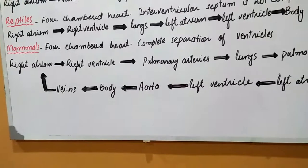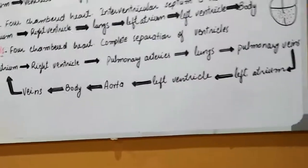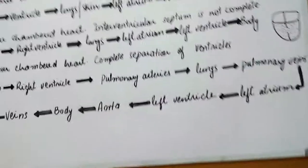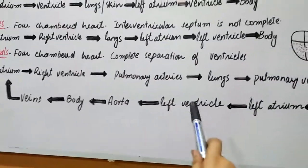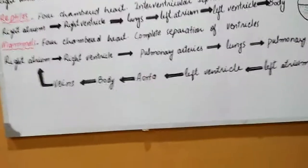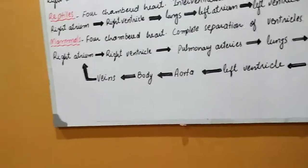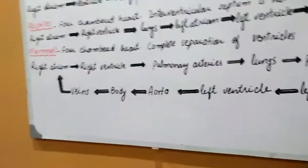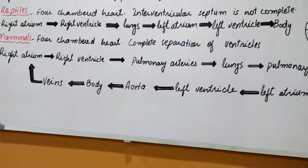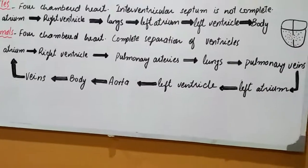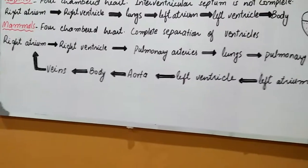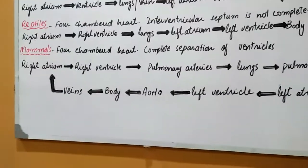Both the right and left atria contract at the same time. When the right atrium contracts, blood enters the right ventricle; at the contraction of the left atrium, blood enters the left ventricle. The blood in the left ventricle is completely oxygenated and enters the aorta. The aortic trunk divides into different branches providing blood to all parts of the body. This portion — from the left ventricle to the body and back — is called systemic circulation, in which oxygenated blood is provided to the body and deoxygenated blood returns to the heart.